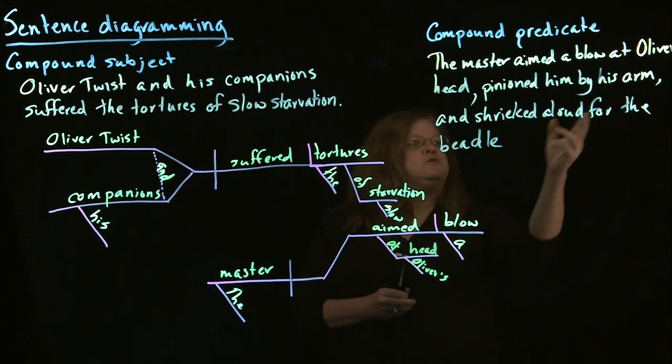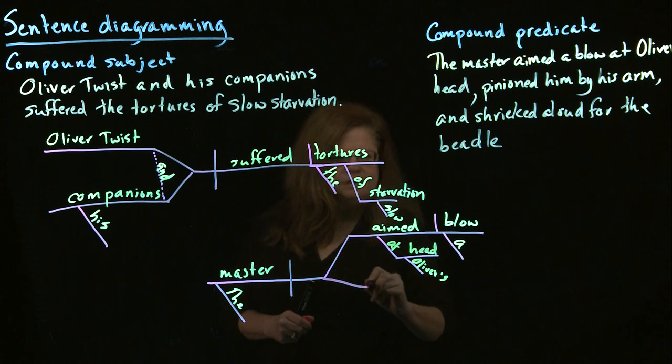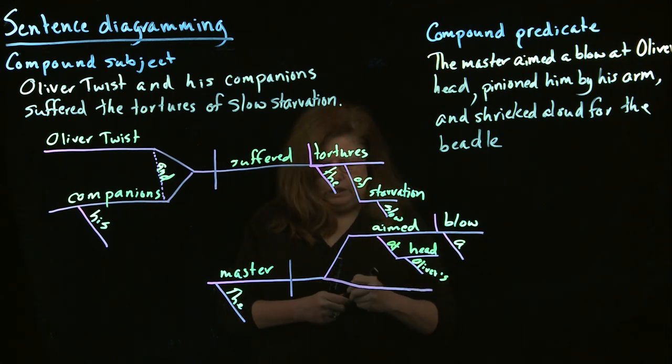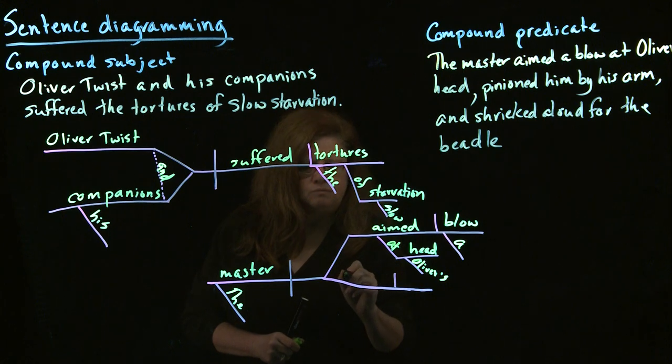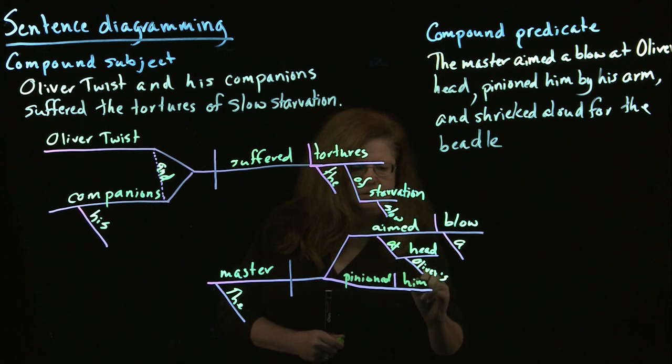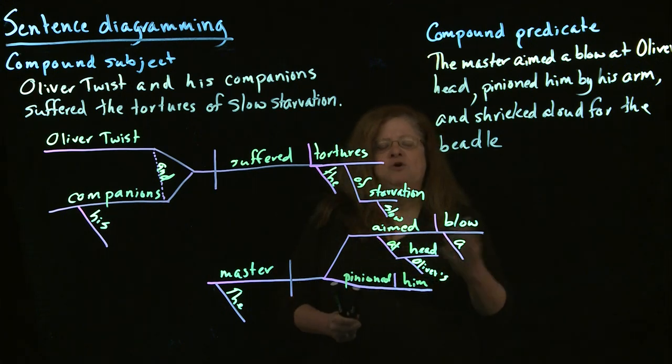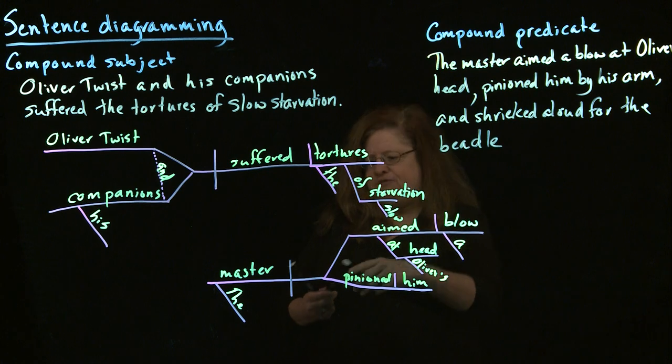And then we have another branch of our predicate. And once again, we have pinioned as our verb. We have him as our object. And we have by his arm, which once again, it's acting as an adverb because it's describing pinioned. How did he pinion him? He pinioned him by his arm. So that's modifying pinioned.